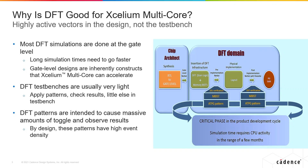By their very nature, DFT patterns are intended to cause huge amounts of toggle and then observe those results. So by default, these designs have high event density. We have high event density in a gate-level simulation that takes a long time — perfect for Accelium multi-core.